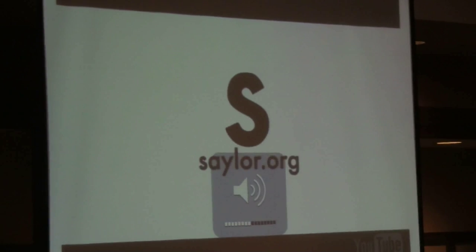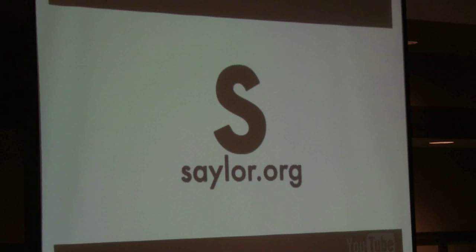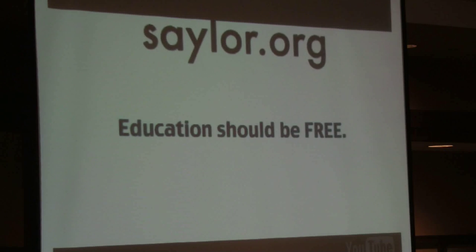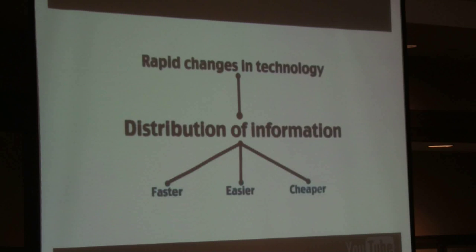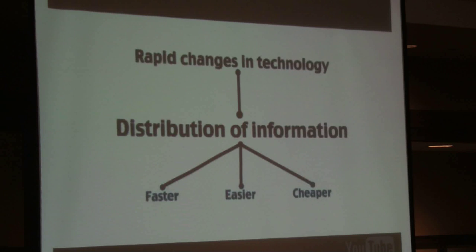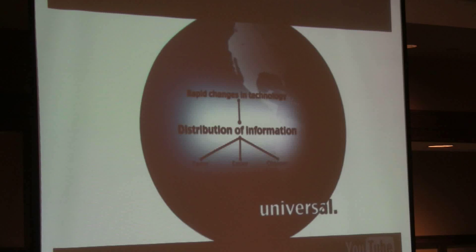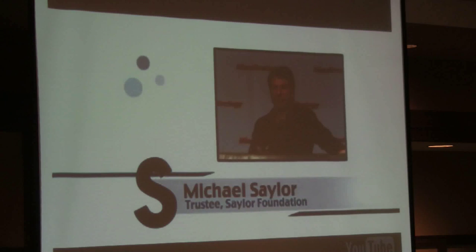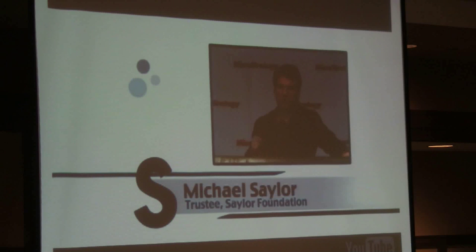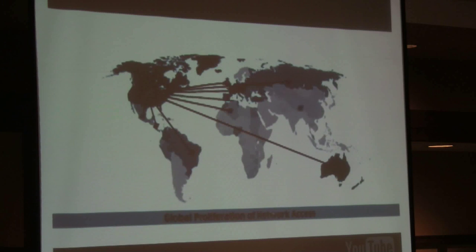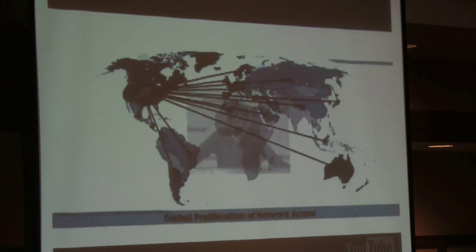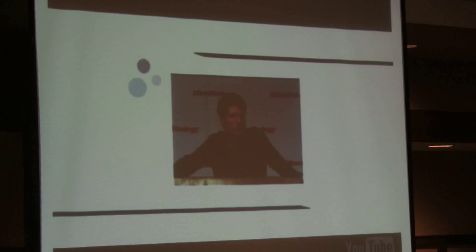Michael Sailor created the Sailor Foundation because he had a very simple, very earnest, and very bold idea: education should be free. Rapid changes in technology are making the distribution of information faster, easier, and cheaper. Increasingly, the distribution of and access to education can be universal. We've reached an inflection point where it's now cheaper to learn to read on a tablet computer than it is to learn to read on paper. More people can access mobile networks in the world than can get access to running water. So network access is greater, and as that happens, you've got this profound, disruptive, egalitarian, utilitarian tornado that's blowing through everything.